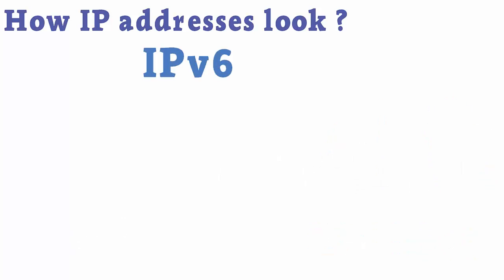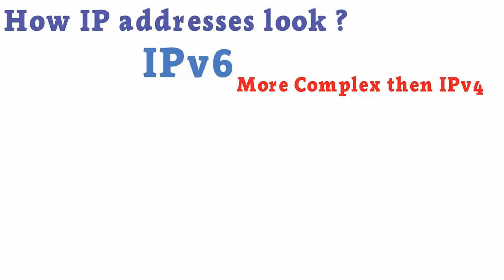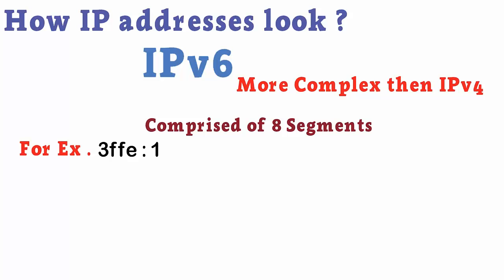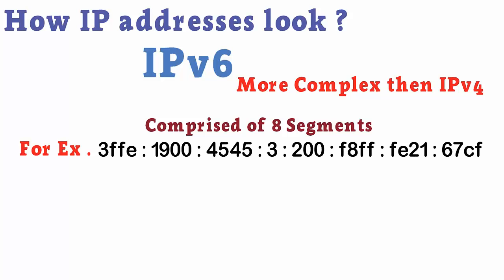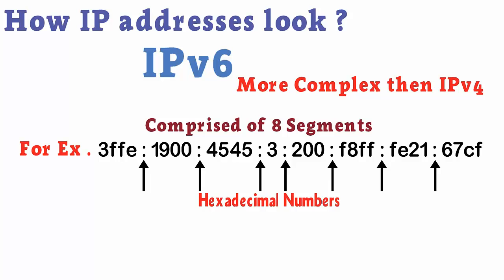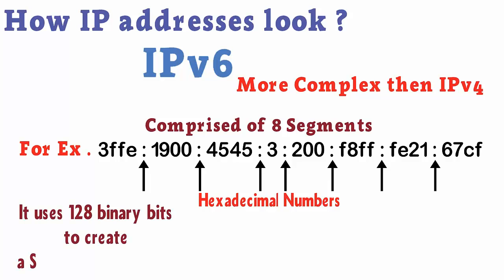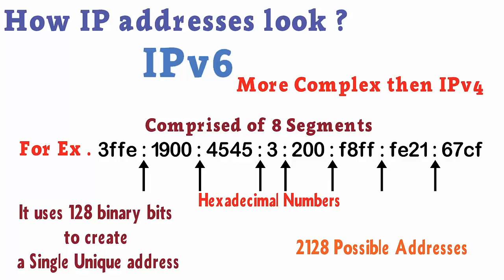IPv6 addresses are more complex. IPv6 addresses are comprised of eight segments — for example, this is an IPv6 address. An IPv6 address is expressed by eight groups of hexadecimal numbers separated by colons. IPv6 uses 128 binary bits to create a single unique address on the network, giving 2^128 possible addresses.